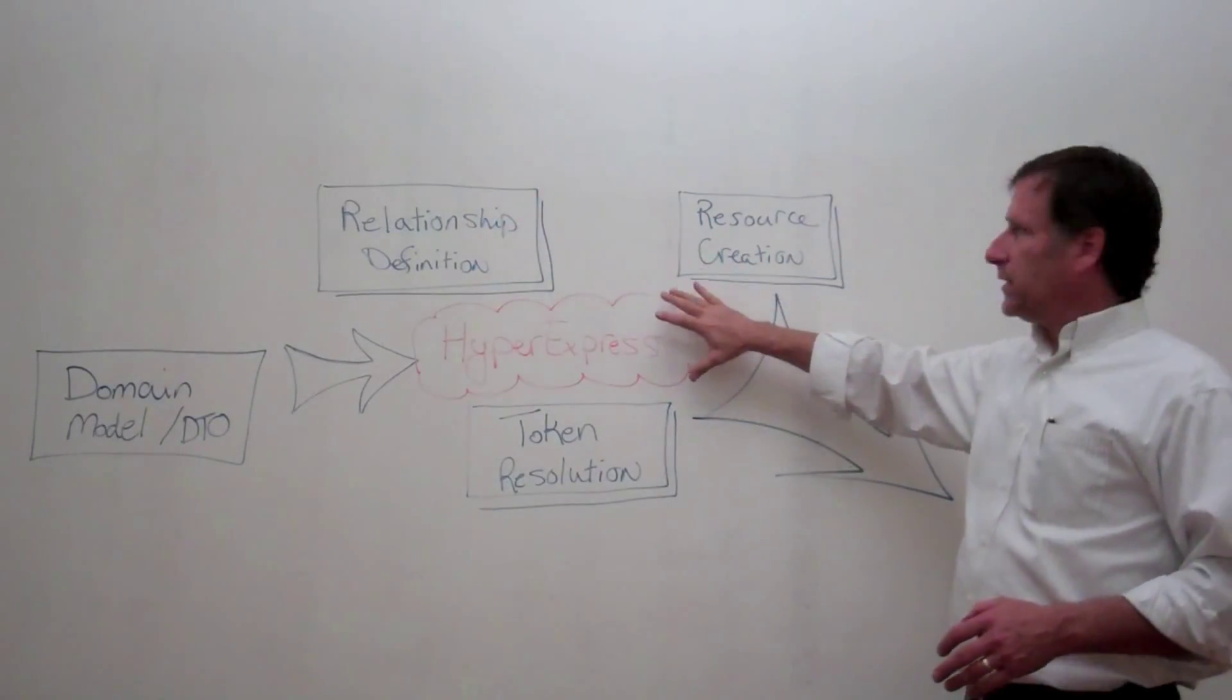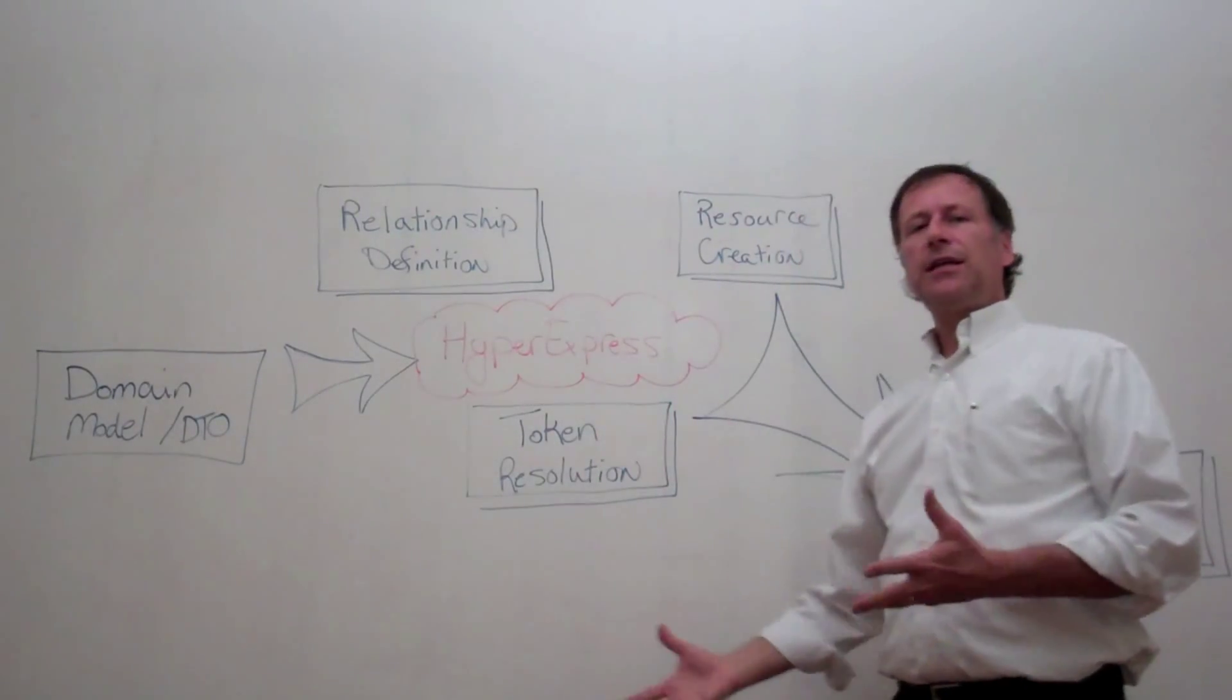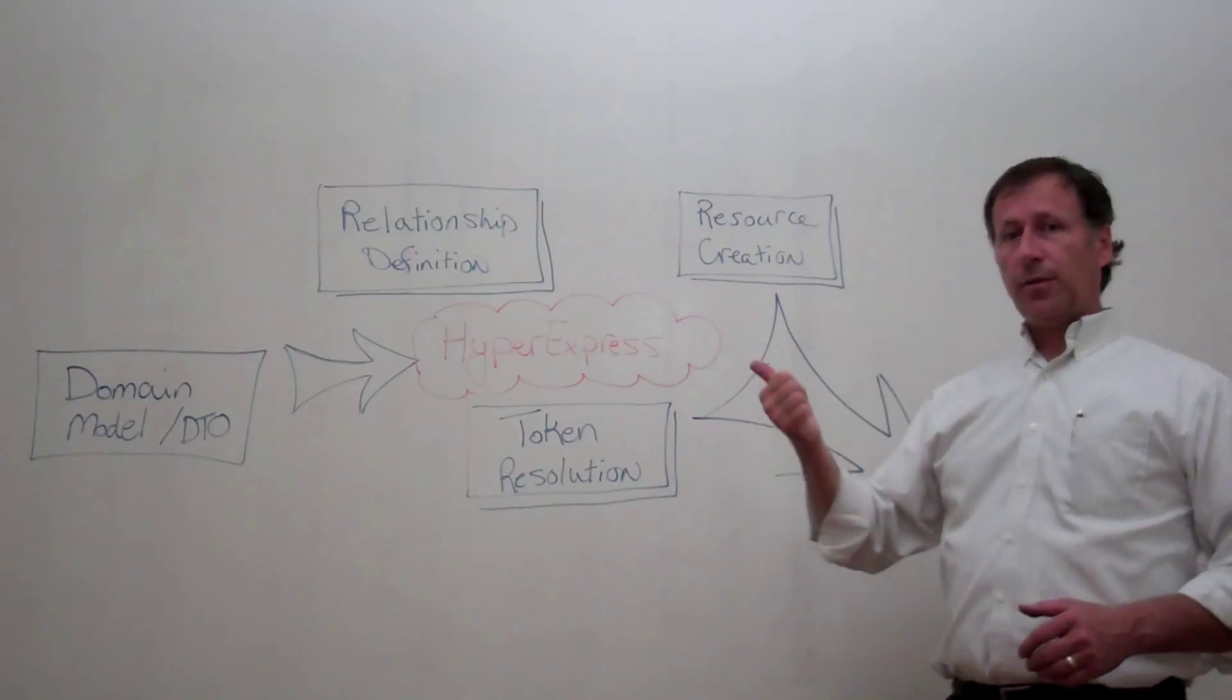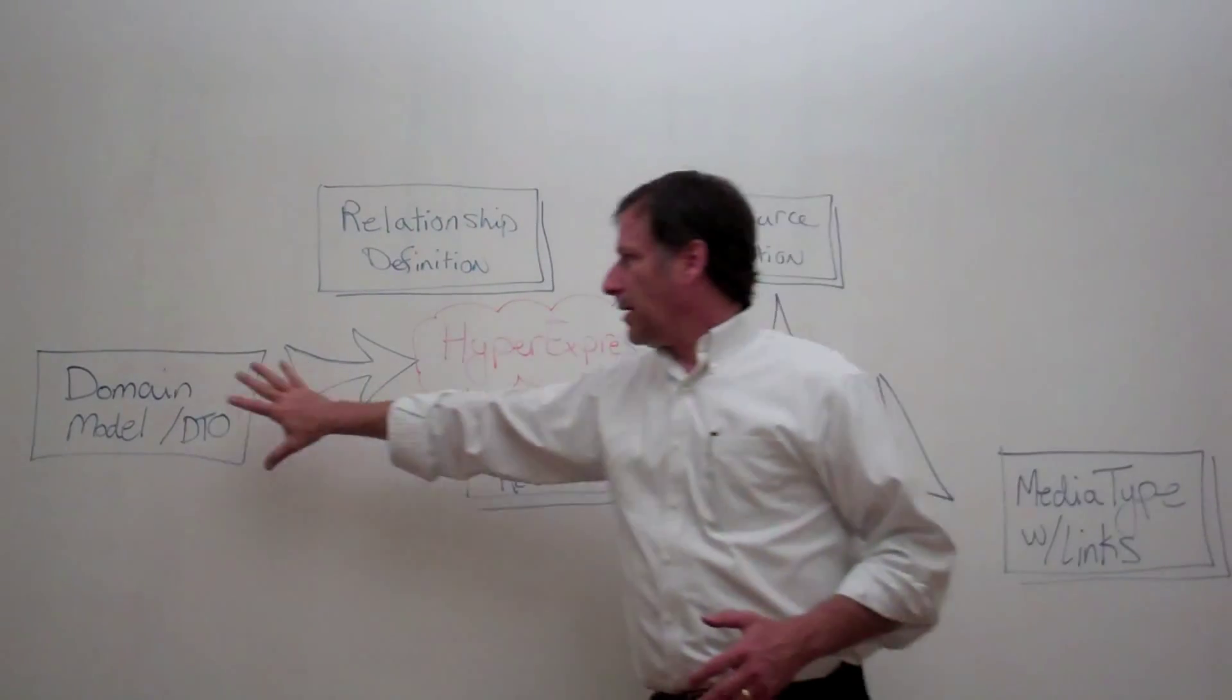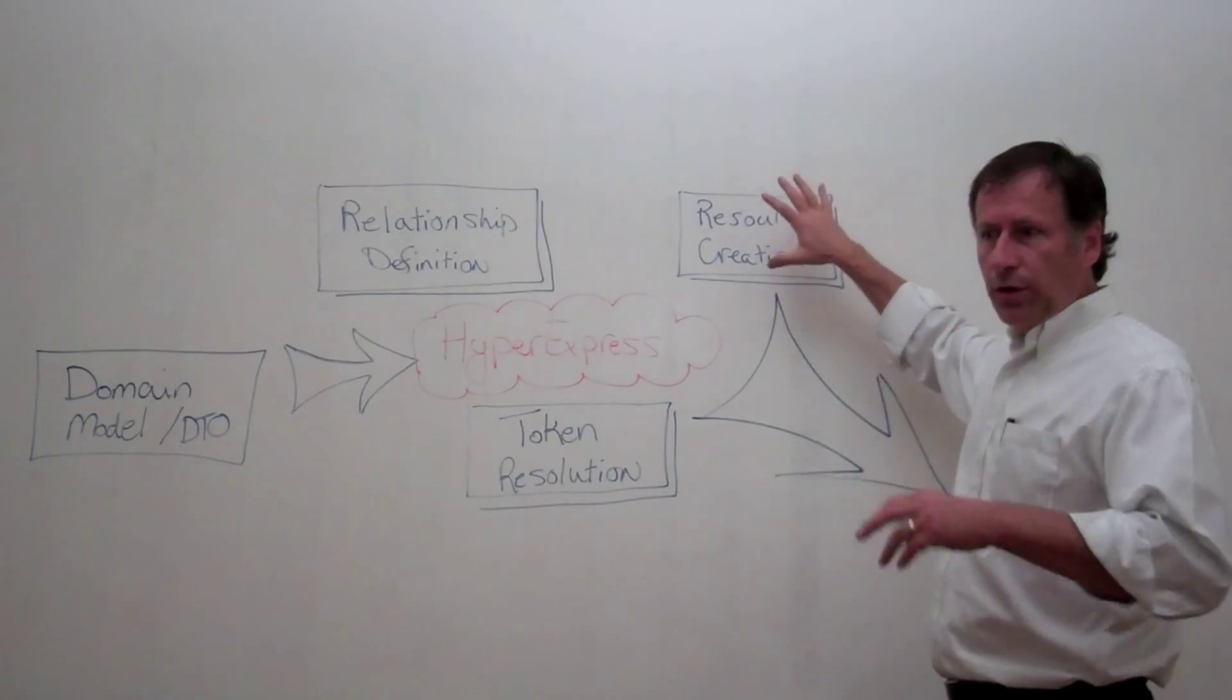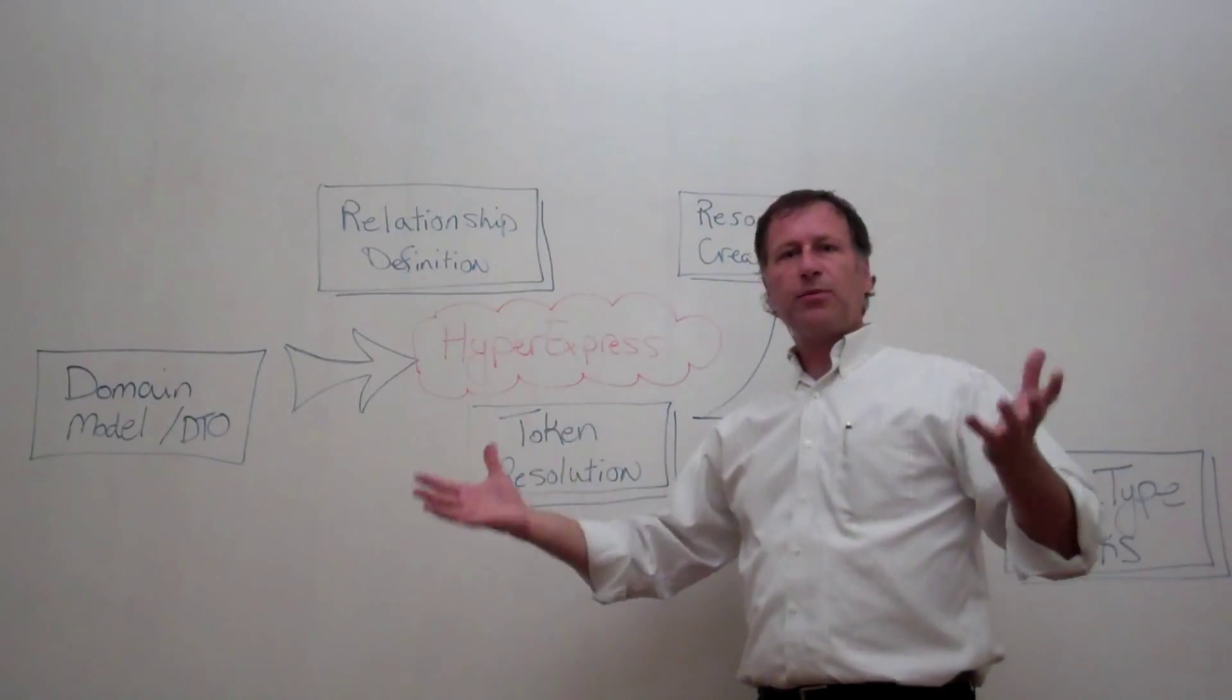The third thing that HyperXpress does is it creates resources. Resources in an abstract sense, in that they can be HAL resources, they can be Siren resources, they could be JSON-LD resources. So it maps the domain model to a resource that is just a resource definition. It's an abstract thing.